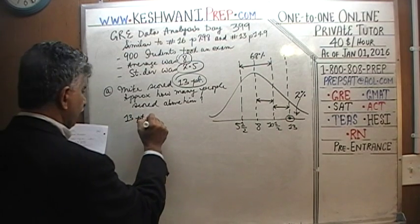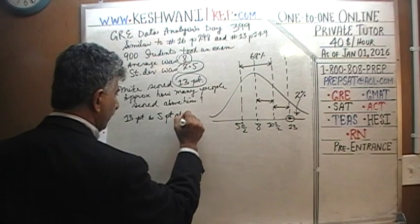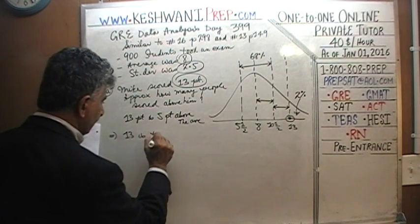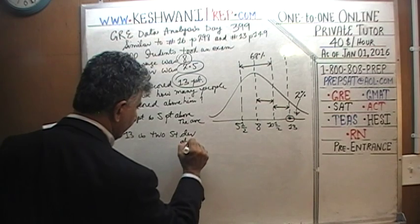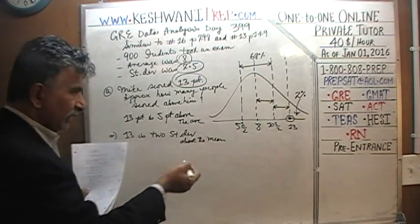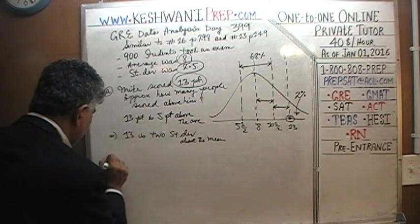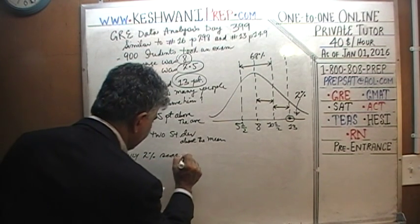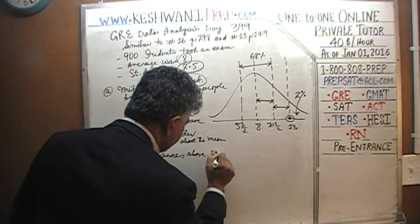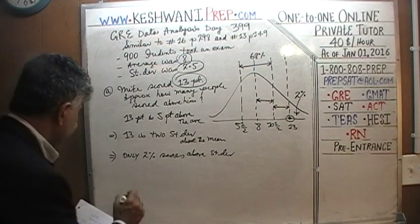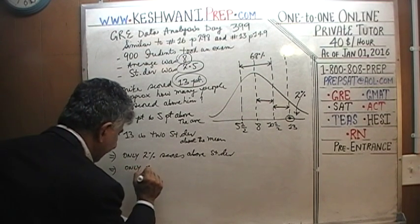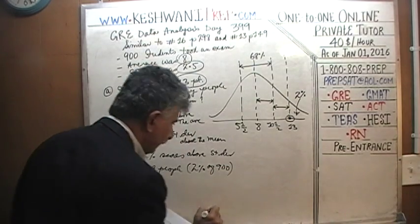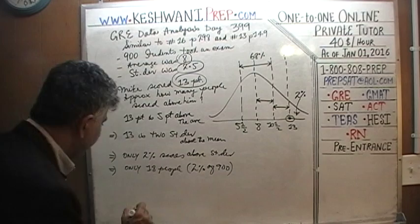13 is 5 points above the average, which means 13 is two standard deviations above the mean. We know that only 2% of people score above two standard deviations from the mean. Two percent of 900: one percent of 900 is 9, so two percent is 18. Only 18 people scored above Michael.